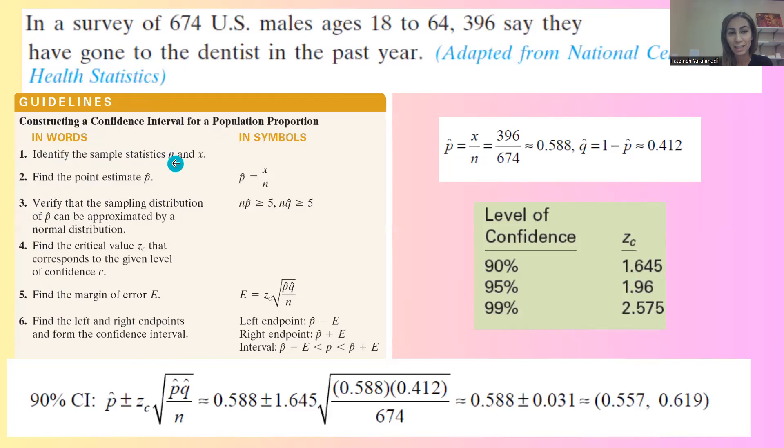Remember that n is the sample size. The sample size is the total number of people in the survey, 674, which is basically on the denominator. On the numerator, you have x, which is the number of successes.